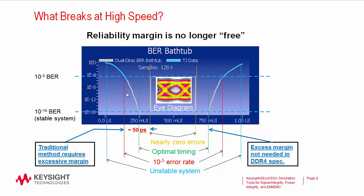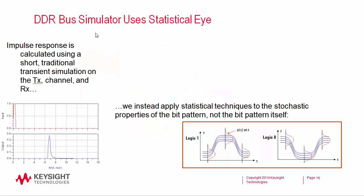So we got to thinking: is there a way of generating this BER bathtub curve that is both fast and accurate? Obviously we can't run 10 to the 16 bits through the system, and the dual Dirac approximation has its limitations. It turns out there is a better way. Instead of using the dual Dirac approximation with all its assumptions, DDR Bus Simulator instead uses statistical eyes — a technique we've adapted from methods used in SERDEs for a number of years.